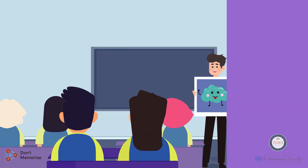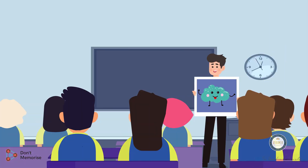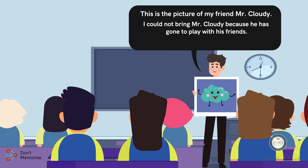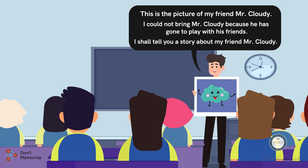Let's begin by displaying the picture card of the cloud to the students. While doing so, we will say the following sentences: This is a picture of my friend Mr. Cloudy. I could not bring Mr. Cloudy because he has gone to play with his friends. I shall tell you a story about my friend Mr. Cloudy.